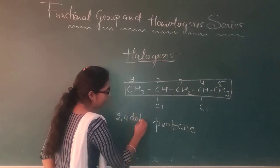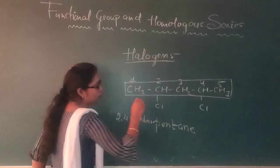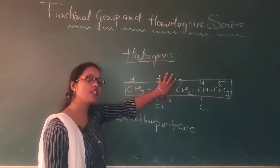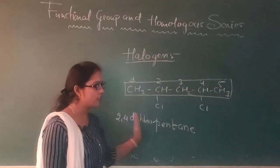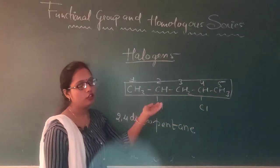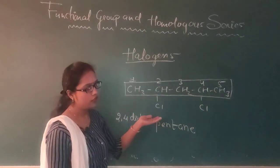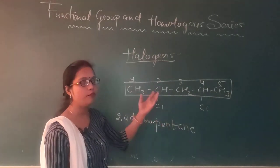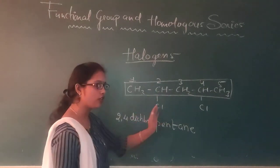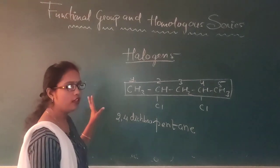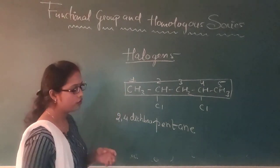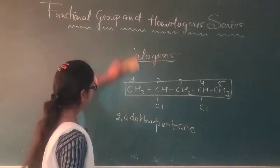Toh always aapka jo halogen hai, wo prefix ki tarah use hoti hai, kabhi bhi as a suffix use nahi hoti. For chlorine, you use 'chloro'; for fluorine, 'fluoro'; for bromine, 'bromo'; for iodine, 'iodo'. Aur is tarike se aap koi bhi halogen compound ka nomenclature kar sakti ho. Now next — we will start with alcohol.